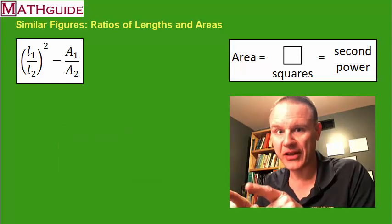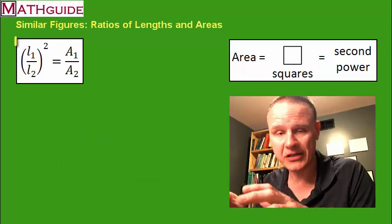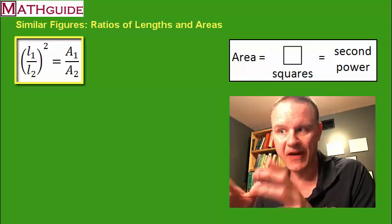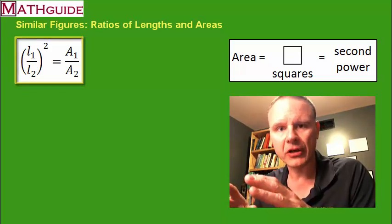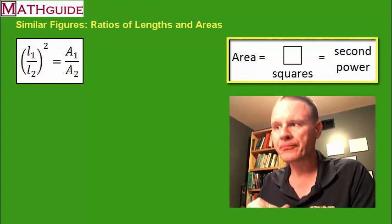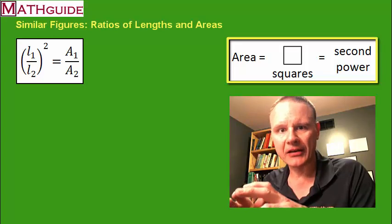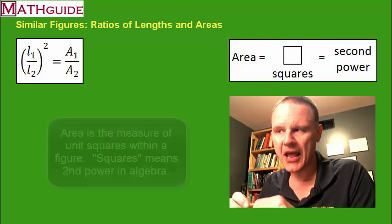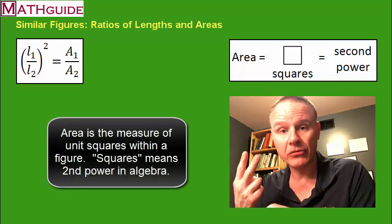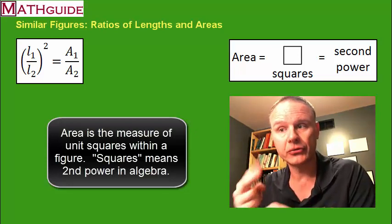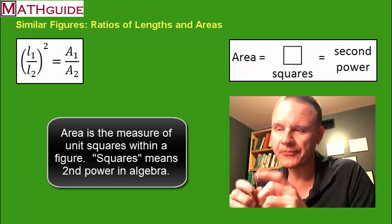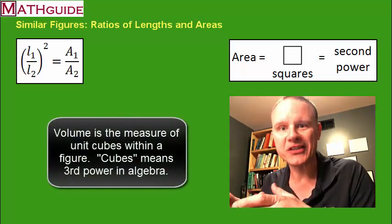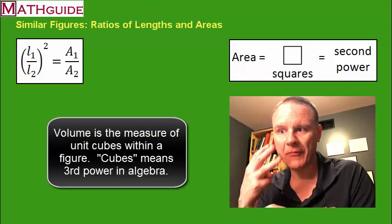So the special relationship that exists between two similar figures with areas and lengths is the one that I have up there in the top left. And I want to show you how to use that with the two sections that follow this one. And just as a little graphic organizer, you see in the top right there, I have a little bit of a reminder that area is really just the measurement of how many unit squares are in a figure. And when we say squares in algebra, we refer to the power two. And so that's why when you look at that special proportion I have up there in the top left, you see the square. So if we were doing this problem with volumes, you'd have unit cubes and then we'd have power three.